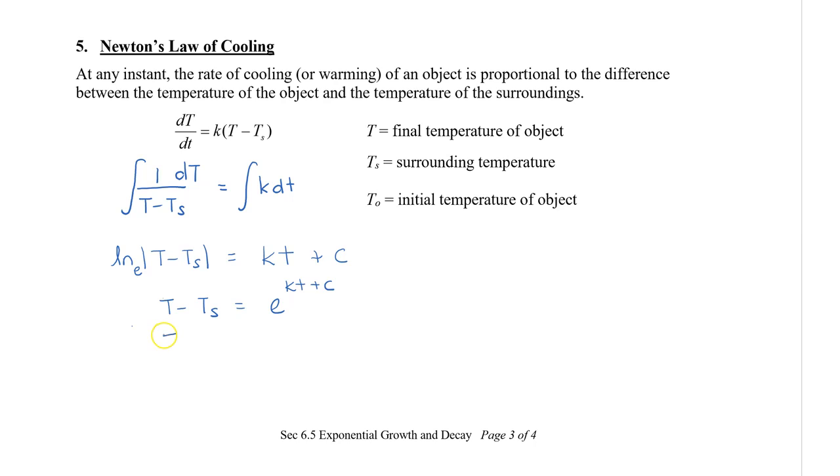Next, I'm going to separate my right side so that I have e to the kt times e to the c. The reason I've done that is I actually can separate this e to the c. E to the c is still a constant number, so it doesn't matter really what c is. It will be whatever the arbitrary constant that we pick.